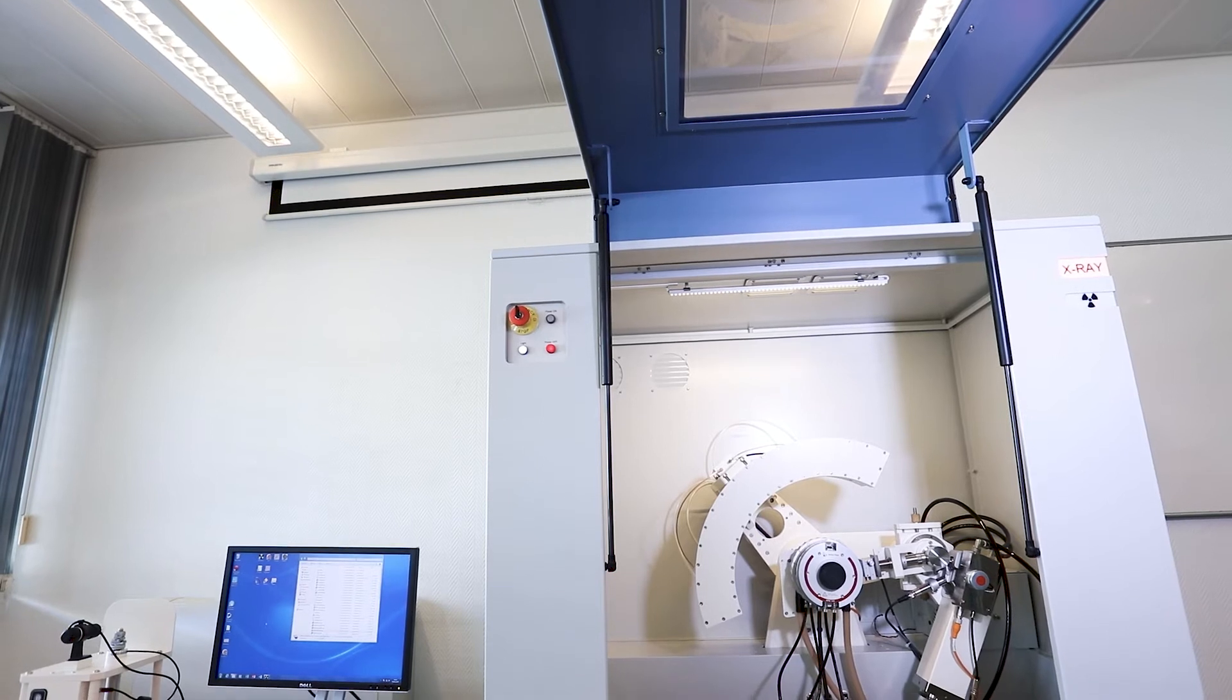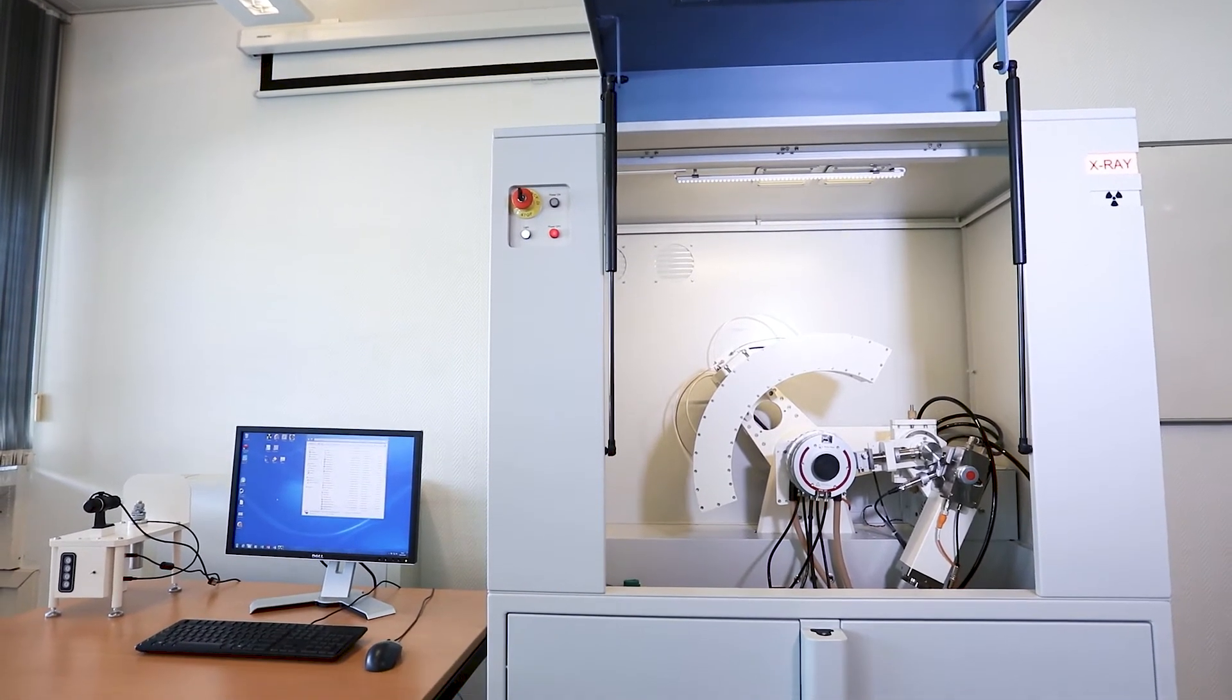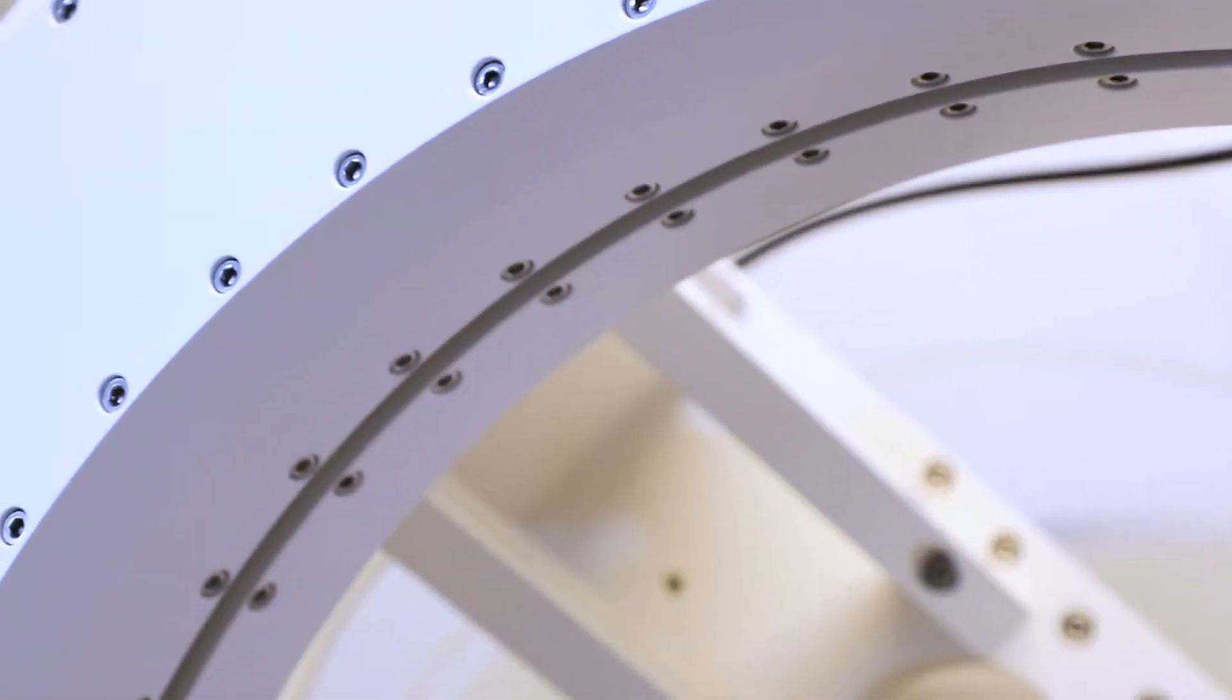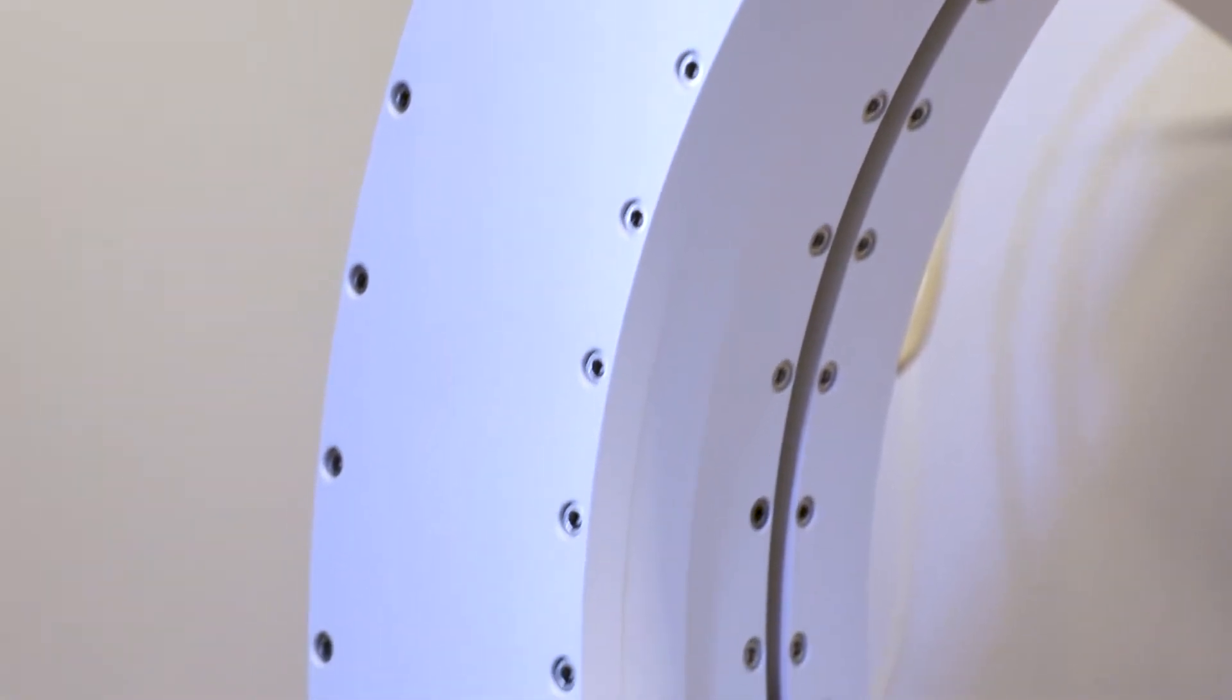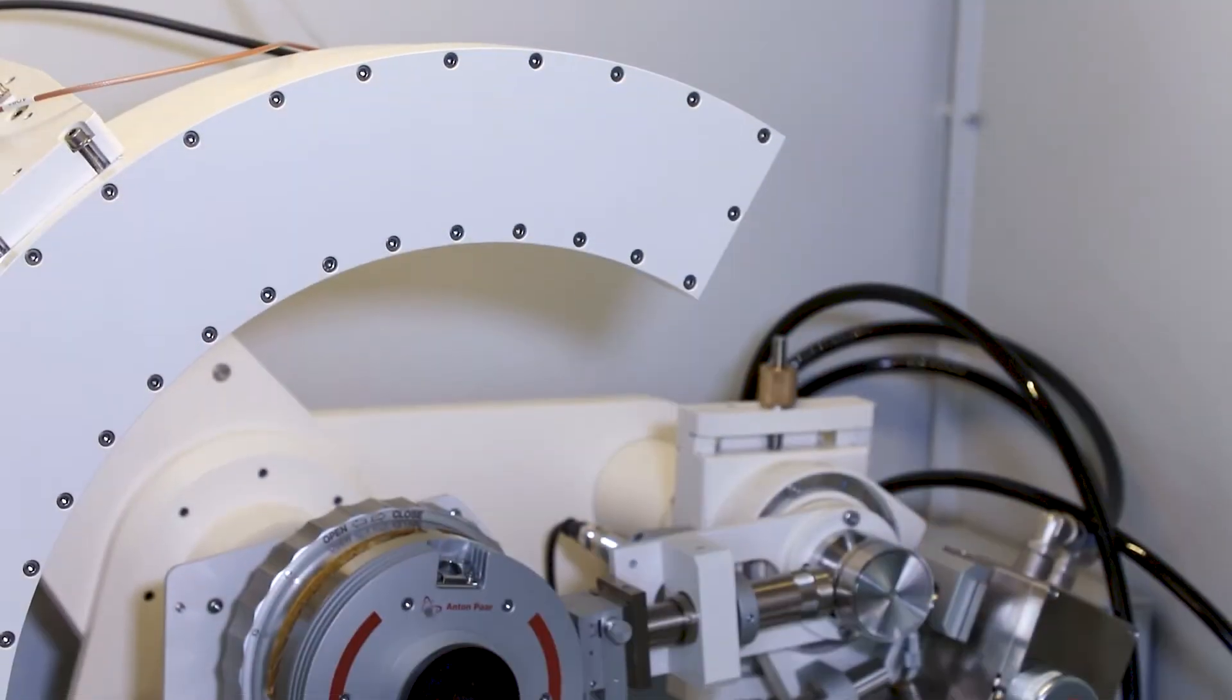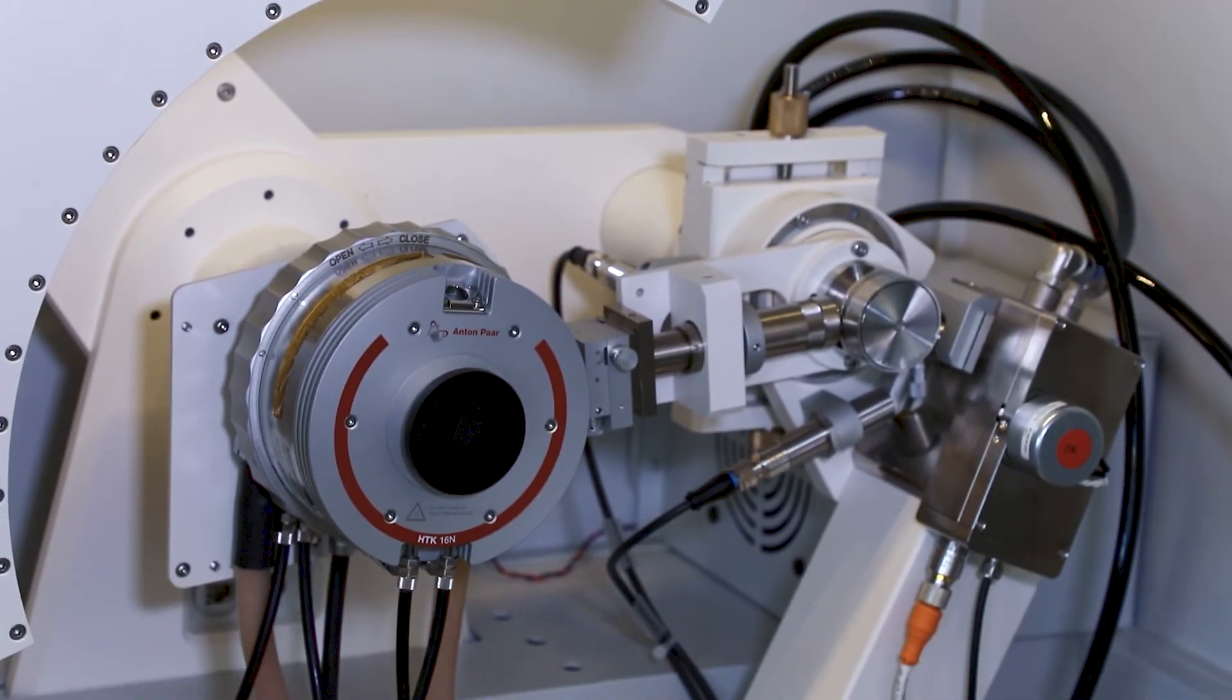The ARL Equinox 3000 and 3500 instruments feature a unique curved position-sensitive detector for simultaneous acquisition of full diffraction pattern, enabling faster analysis, in-situ experiments, and studies of crystalline phase development and phase transitions.